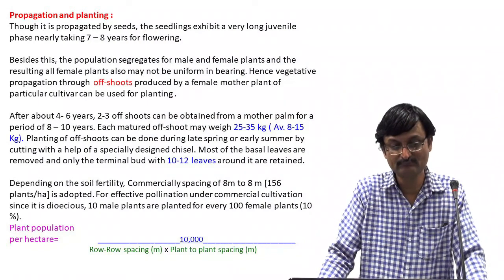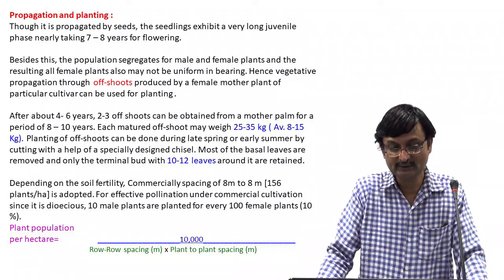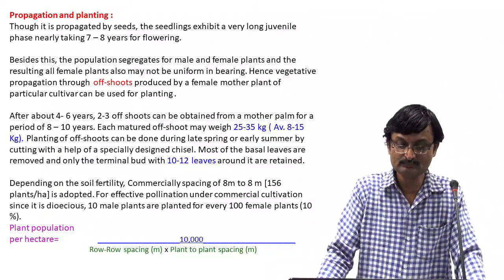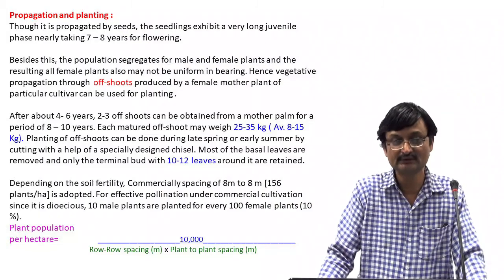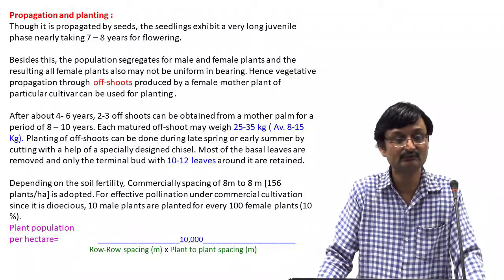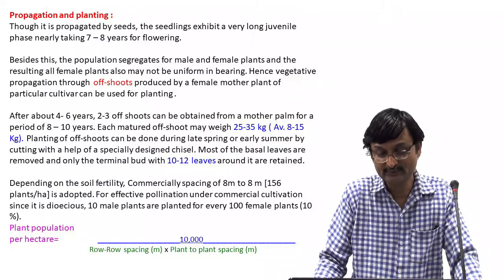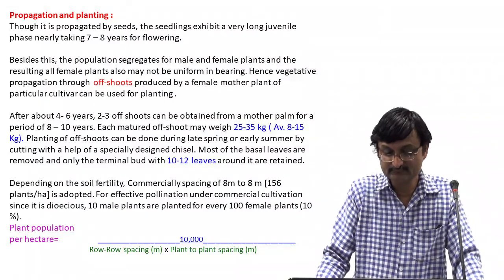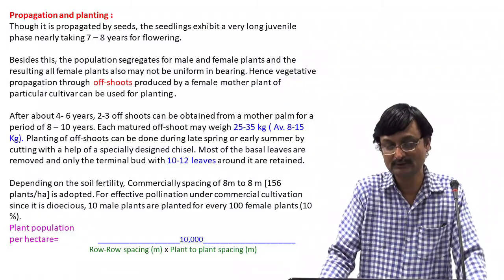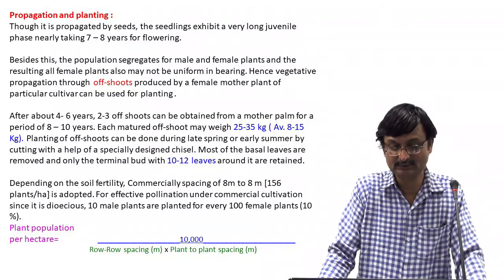Each matured offshoot may weigh 25 to 35 kg with an average of 8 to 15 kg. Planting of offshoots can be done during late spring or early summer by cutting with the help of a specially designed chisel. Most of the basal leaves are removed and only the terminal buds with 10 to 12 leaves around it are retained. Depending on the soil fertility, the commercial spacing of 8m × 8m accommodates about 156 plants per hectare. Since date palm is dioecious, 10 male plants are planted for every 100 female plants — that is 10 percent.